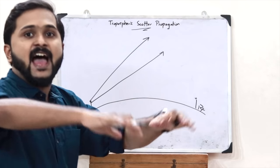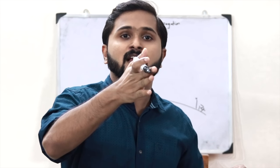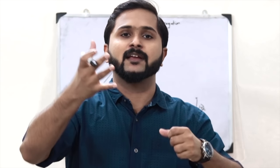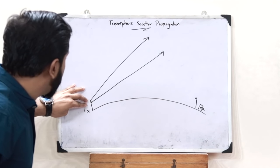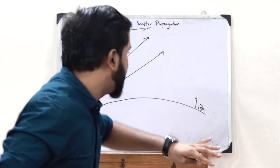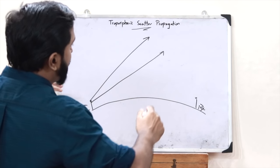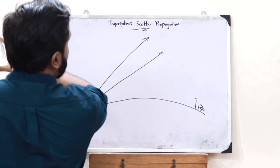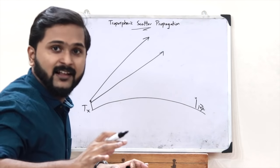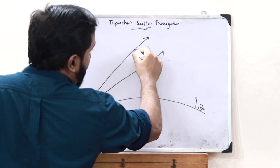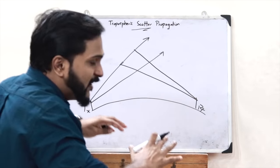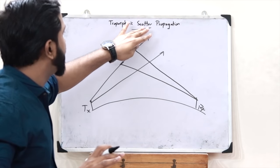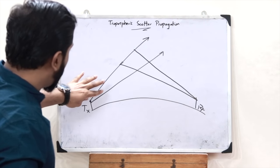When the signal reaches the troposphere, it gets scattered. Scattering is a process by which rays get deviated from their actual straight path when they strike something like dust particles or water vapors. So when these electromagnetic radio waves reach the troposphere, scattering happens — the wave starts getting scattered in all directions. Some waves scatter back to earth, some in various directions, and some scatter back onto the receiver.